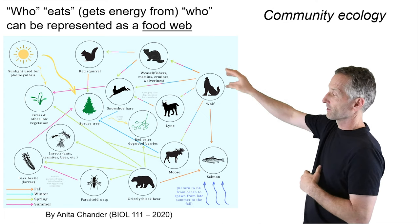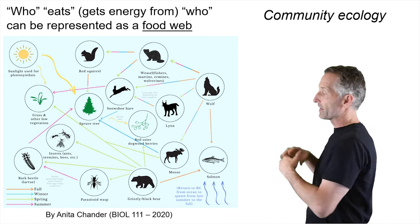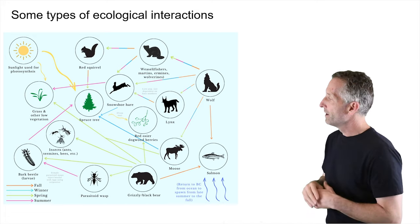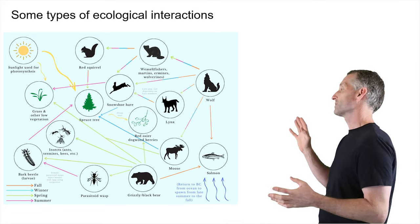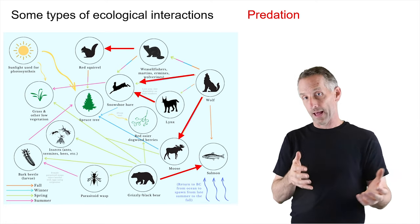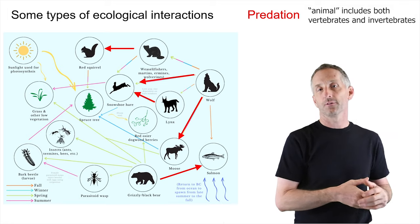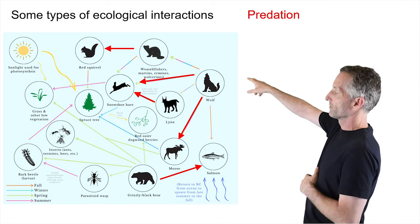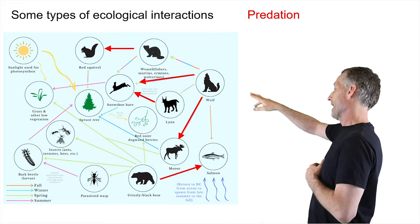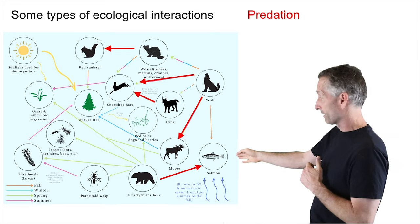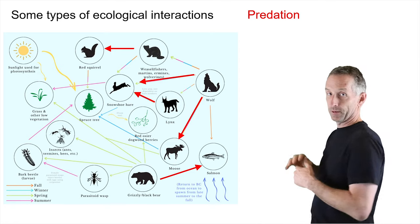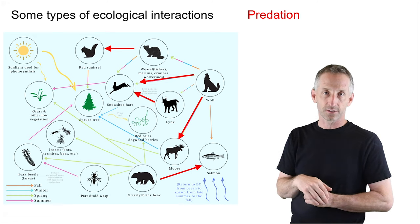You have grasses getting their energy from the sun, then a bunch of things feeding on the grasses and trees, and then predators feeding on those. Let's point out some of the different types of ecological interactions. Predation is where one animal preys on and consumes another — weasels feeding on red squirrels, wolves feeding on snowshoe hares, lynx also feeding on snowshoe hares, wolves feeding on moose, and grizzly bears feeding on and scavenging salmon.